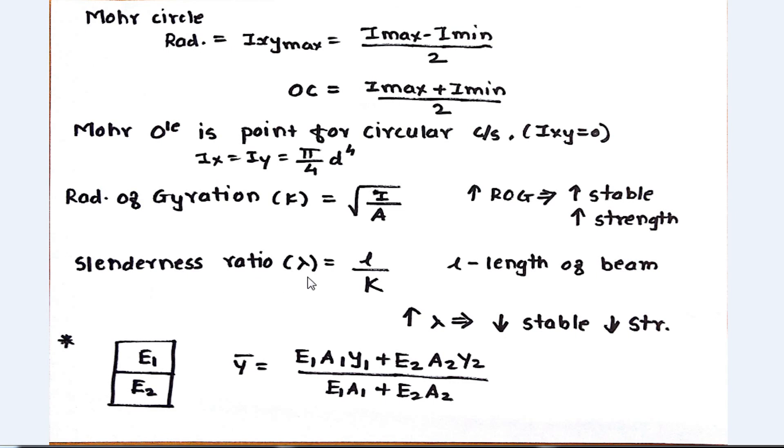Next is slenderness ratio. Lambda equals L by K, where L is the length of the beam. As lambda increases, the stability of the member decreases, which results in the strength of the member decreasing.